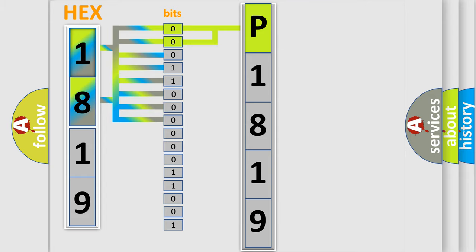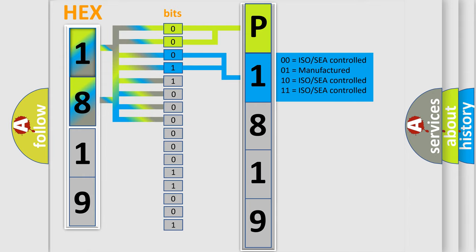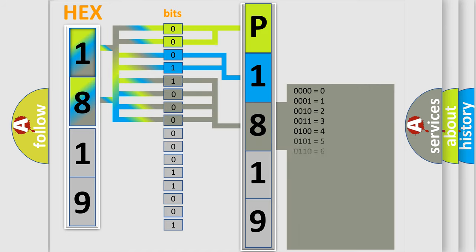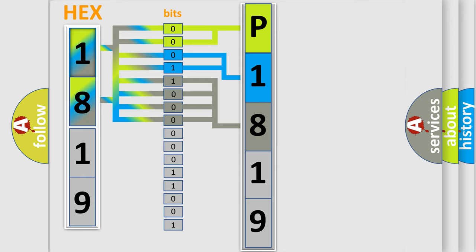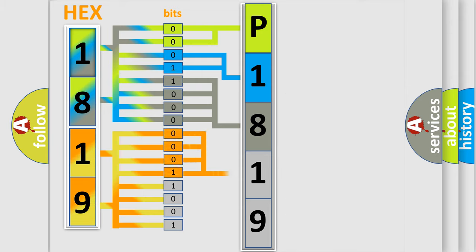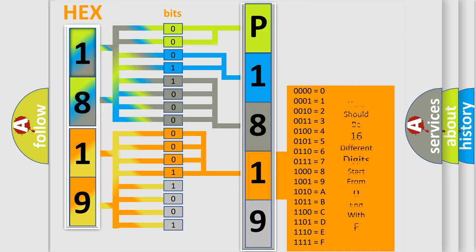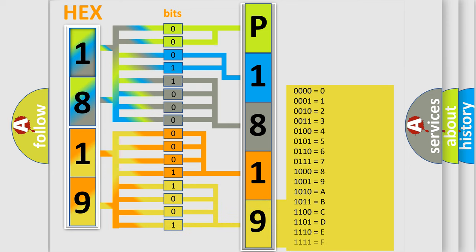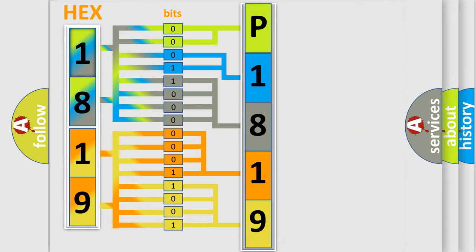The next two bits again determine the second character. The last four bits of the first byte define the third character of the code. The second byte is composed of a combination of eight bits. The first four bits determine the fourth character of the code, and the combination of the last four bits defines the fifth character. A single byte conceals 256 possible combinations.